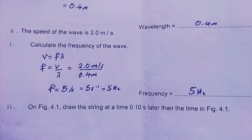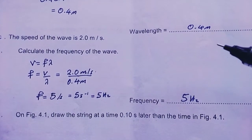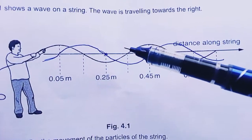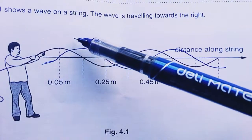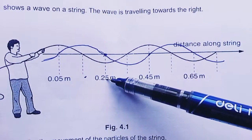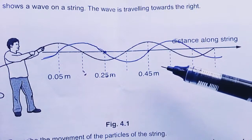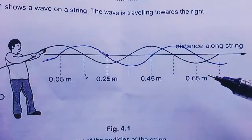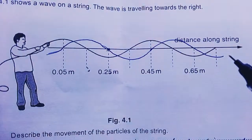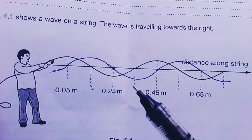On figure 4.1, draw a string at a time 0.1 seconds later. Draw a wave that is 0.1 seconds later. From there to there, this is 0.1. You add another 0.1 to give you 0.25. This is 0.15, 0.25, 0.35, 0.45, 0.55, 0.65. I drew a wave that is cutting through at the difference of 0.1 to the original wave that this guy is creating with his rope right there.